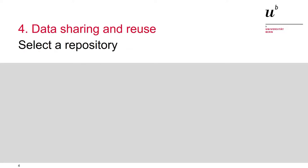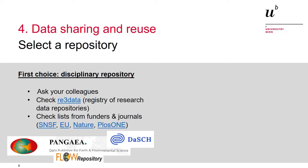Now let's have a look at what kind of repositories there are and how you can find one that fits your data and situation. As a first choice, we recommend using a disciplinary repository if there is one that fits your data. The probably easiest way to find such a repository is to ask colleagues who have already published data — this has the additional advantage that you can also ask for tips and tricks on how to use the repository. Another option is to use re3data, an online directory of data repositories. The directory contains over 2800 entries and offers the possibility to refine search results with a variety of filters such as subject, content type or keywords.